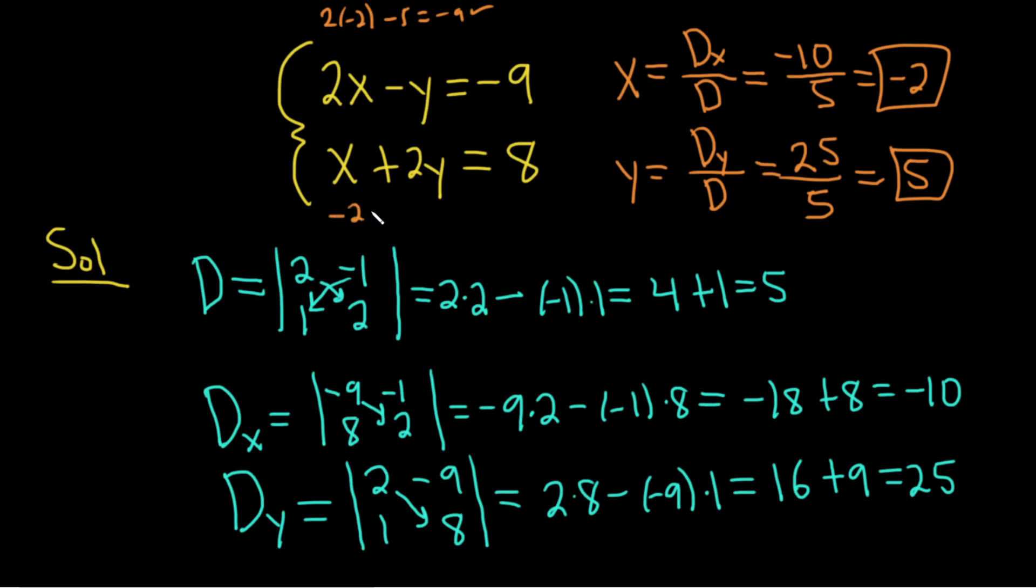And then same thing here. Here you would get negative 2 plus 2 times 5, which is 8. Also check. So you could plug these back in and check to make sure you're correct.